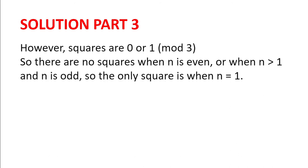However, squares are either 0 modulo 3 or 1 modulo 3, and 2 is neither 0 nor 1. So there are no squares when n is even, or when n is greater than 1 and odd. So the only square is when n is 1, which is 45 squared.